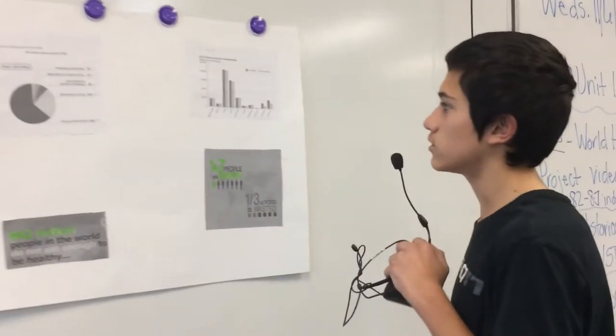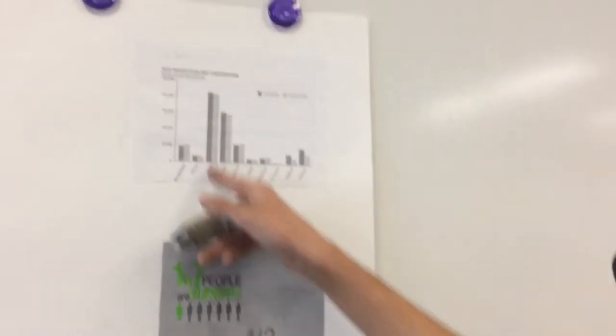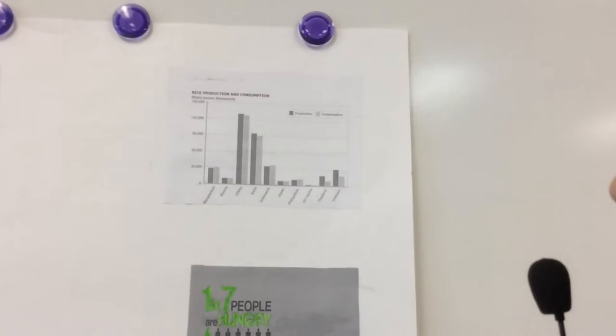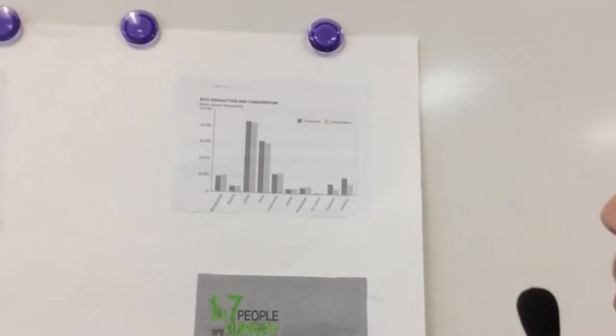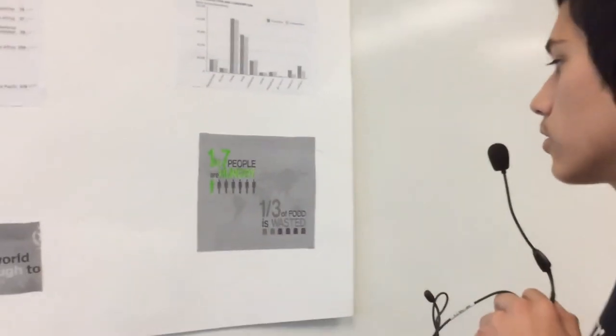The highest being 150,000. The lowest being zero. The dark shade of gray is production. The light shade is consumption. Bangladesh, Indonesia, and the Philippines have more consumption than they do production. One in seven people are hungry.